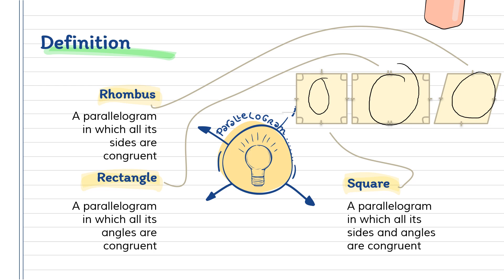A square can also be a rhombus because all its sides are congruent. A square can also be a rectangle because all its angles are congruent.